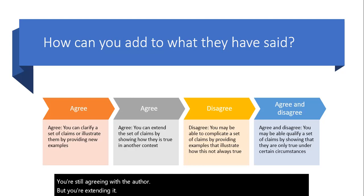You can also disagree. You may be able to complicate a set of claims by providing examples that illustrate how this is not always true, or it's not true anymore. To agree and disagree is to say parts of what someone said is true, but other parts may not always be true. They're only true under certain circumstances. Again, you've got to start with something specific.